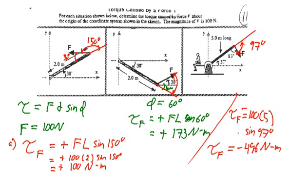So again to recap, the main skill in this problem was to find the angle between the force that we're interested in and the axis of the object. And we usually had to make an adjustment from the angle that was given in order to find that particular angle. It was 150 degrees for the first case, 60 degrees for the second case, and 97 degrees for the third case.